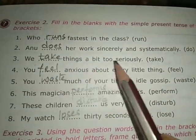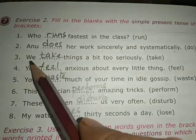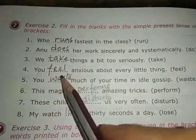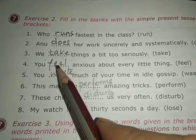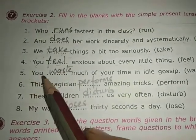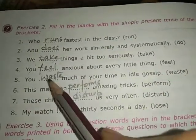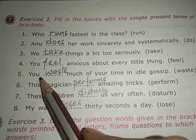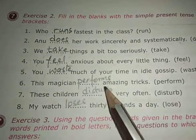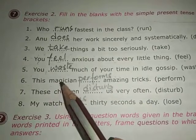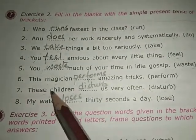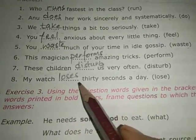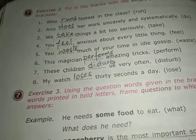Third: we take things a bit too seriously — 'take' remains 'take' because it is plural. Number four: you feel anxious about every little thing — 'feel' remains 'feel' because we are using it with 'you'. Number five: you waste much of your time in idle gossip — 'waste' remains 'waste'. This magician performs amazing tricks — 'perform' becomes 'performs' because we are talking about a singular person. These children disturb us every afternoon — 'disturb' remains because children is plural. My watch loses 30 seconds a day — singular watch, so 'lose' becomes 'loses'.